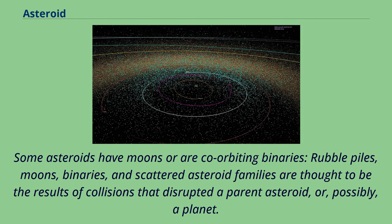Some asteroids have moons or are co-orbiting binaries. Rubble piles, moons, binaries, and scattered asteroid families are thought to be the results of collisions that disrupted a parent asteroid, or possibly a planet.